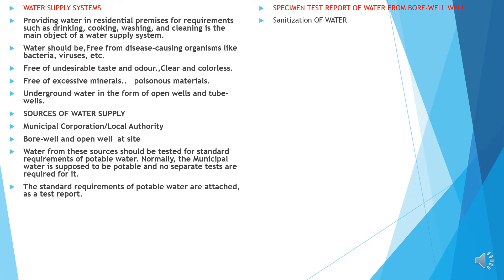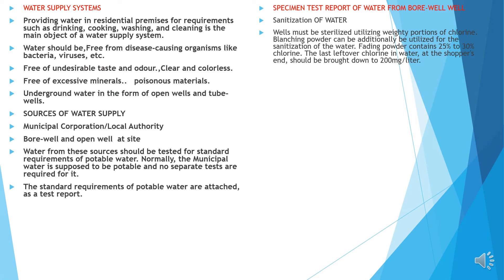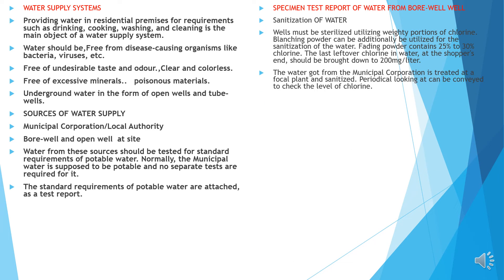Sanitation of the water: wells must be sterilized using heavy doses of chlorine. Bleaching powder can additionally be utilized for sanitation of the water. Bleaching powder contains 25–30% of chlorine. The residual chlorine in water at the consumer end should be brought down to 0.2 mg per litre. The water from the municipal corporation is treated at a local plant and sanitized. Periodic checking can be carried out to check the level of chloride.